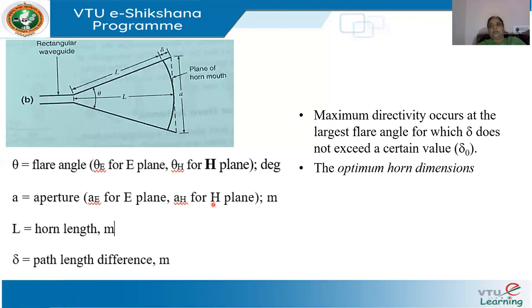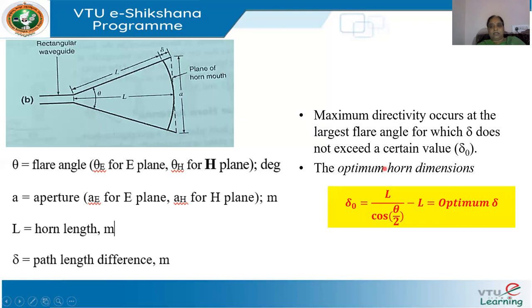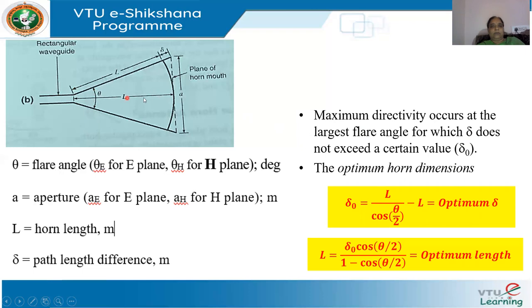The maximum directivity occurs at the largest flare angle for which delta does not exceed a certain value delta_0. The optimum delta is L divided by cos(theta/2) minus L, where theta is the flare angle and L is the horn length. The optimum horn length L is given by delta_0 times cos(theta/2) divided by 1 minus cos(theta/2). These derivations were done in the last class.